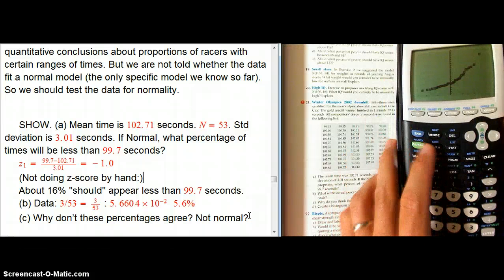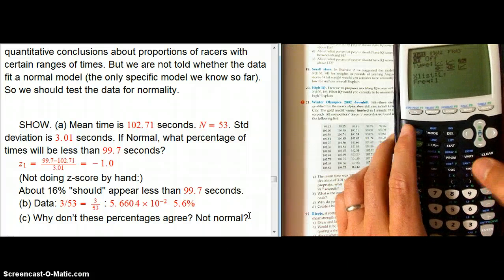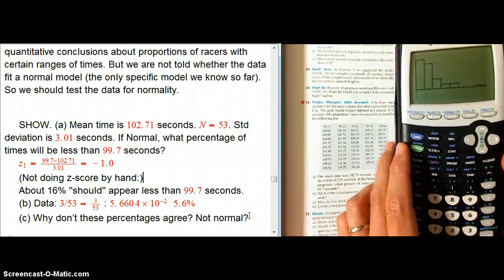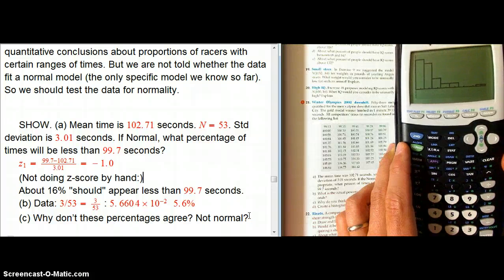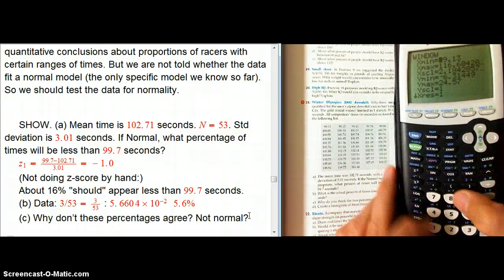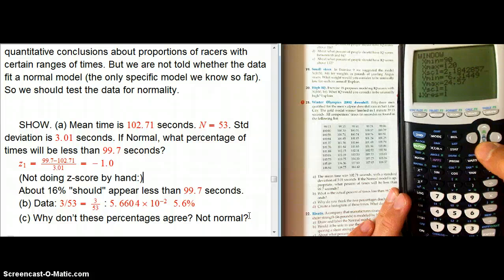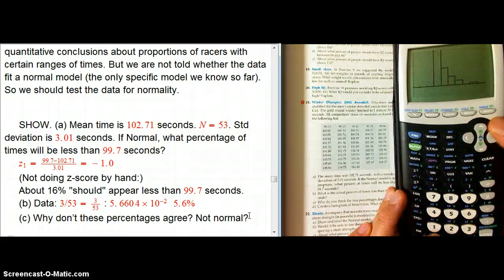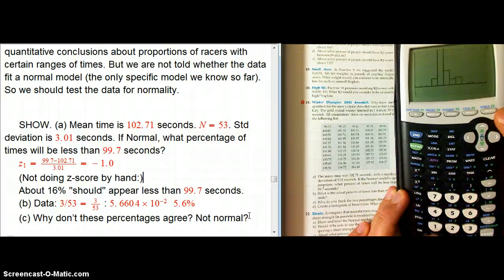But then the next thing we should probably do is go ahead and look at the histogram. So let's go to stat plot again. Change it to histogram mode. And let's try zoom 9. That's an okay histogram. But we could probably get away with 53 data points. We could probably get away with a few more bins. Right away, though, we can see that this doesn't look normal at all. It doesn't look symmetric. It looks like it has a skewed with a tail. It looks like it has an outlier.